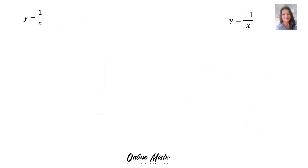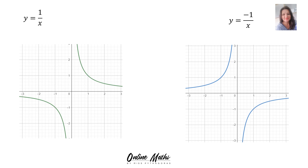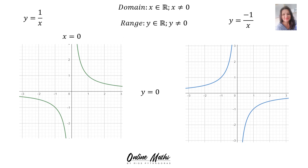Now let's discuss the domain and range. For both y equals 1 over x and y equals negative 1 over x, there is a vertical asymptote at x equals 0 and a horizontal asymptote at y equals 0. For both graphs, the domain is: x is an element of the reals and x may not equal 0. The range is: y is an element of the reals and y is not equal to 0. The restriction corresponds to where you find either the horizontal or vertical asymptote.